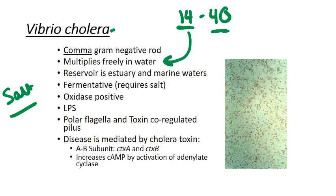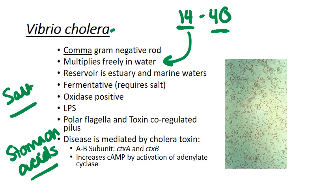Vibrio cholerae can tolerate a wide range of pHs, but is generally susceptible to stomach acids, which can protect us. However, people still get sick because either you need a very large inoculum for enough organisms to make it past the stomach acids, or stomach acids may be neutralized — for example in patients taking omeprazole due to gastric ulcers. The reservoir is estuary and marine waters, where there is heavy access to salt, and they can also be found in fish from those areas.